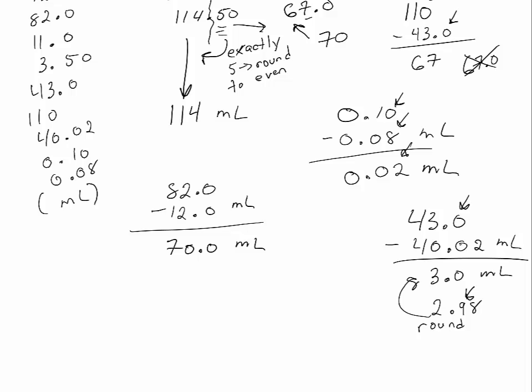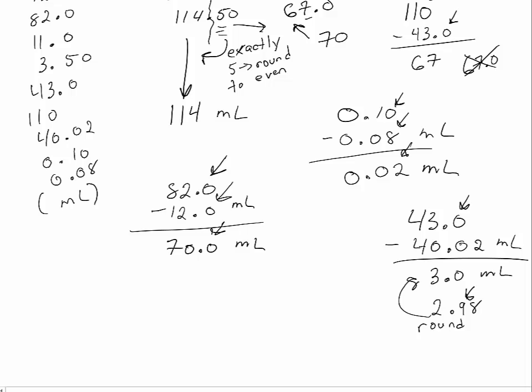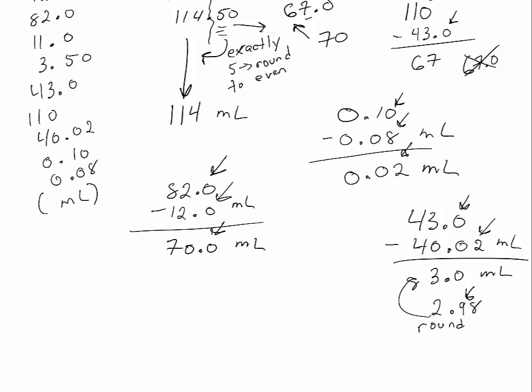For 82.0 minus 12.0, both are precise to the tenths place, so the answer should also be precise to the tenths place. Even though 82 minus 12 is 70, you should keep that extra zero after the decimal point because that reflects the precision of each measurement. For 43.0 minus 40.02, each number has different precision — 43.0 is only precise to the tenths place while 40.02 is precise to the hundredths. The subtraction gives 2.98, but rounding to the tenths place means the 9 rounds up to 10, giving 3.0 milliliters.